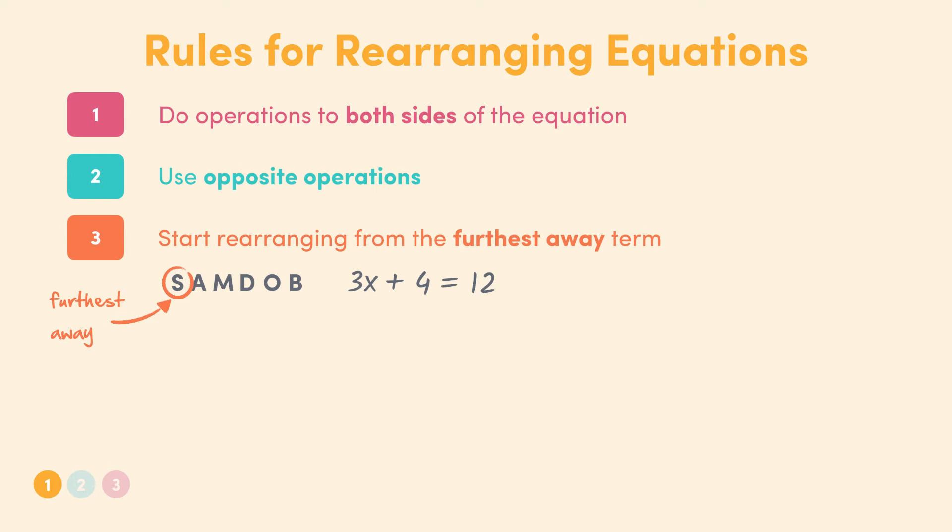This would be the plus 4, so we would minus 4 from both sides. This cancels out the 4 on the left and we're left with 8 on the right. Then looking for any divisions or multiplications, we would have to deal with the 3 in the 3x term next. So we divide both sides by 3. This cancels out the 3 in the 3x term and we're left with x equals 8 divided by 3.